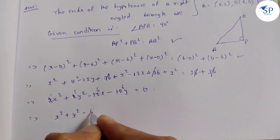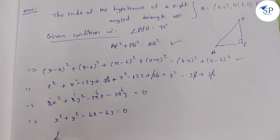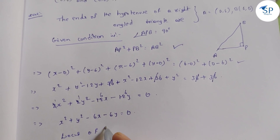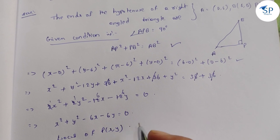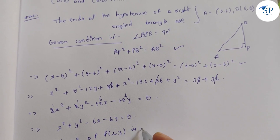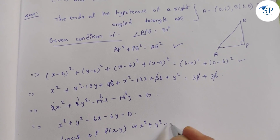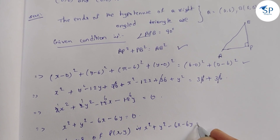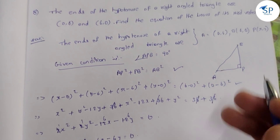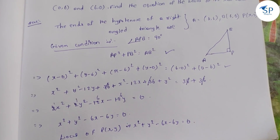So the locus of P(x,y) is x² + y² − 6x − 6y = 0. This is the answer to the problem. Next problem.